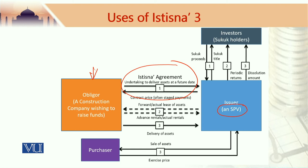This SPV issues Sukuk and the investors invest in the structure through the purchase of Sukuk. The Istisna agreement between the obligor and the SPV allows the issuer, i.e. the SPV, to pay money to the obligor as per the progress of the construction project pursuant to the Istisna agreement.